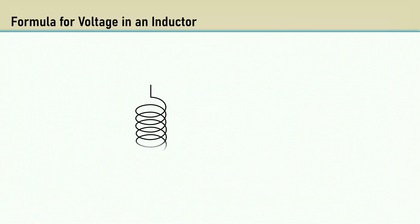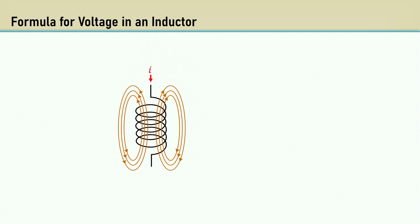Here's a coil of wire. When the current flows through the coil of wire, it creates a magnetic field. These are the lines of magnetic flux. Flux is represented by the uppercase Greek letter phi. It's equal to the product of inductance L and the current I. The more inductance, the more flux. The more current, the more flux.